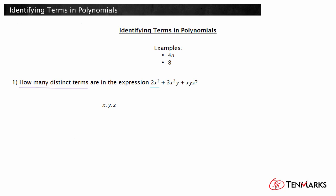Here, 2x² is one term. 3x²y is another term. And xyz is another one. Therefore, there are a total of three distinct terms in this expression.